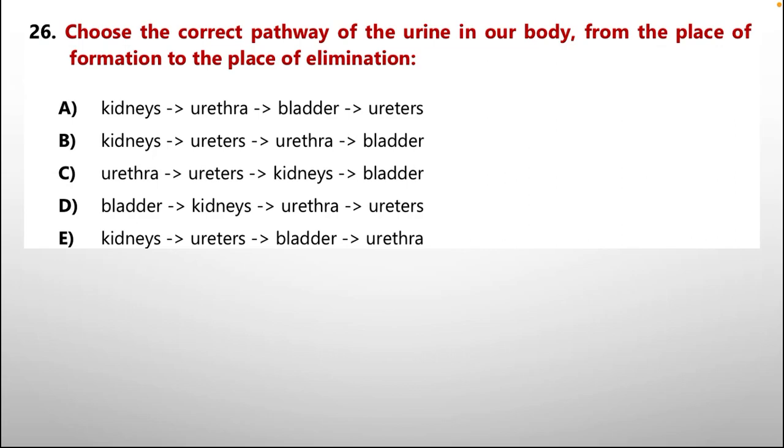Moving on, question number 26. Choose the correct pathway of the urine in our body from the place of formation to the place of elimination. The orders, the different kind of orders are given in options below. Option number A: Kidneys, urethra, bladder, ureters. B: Kidneys, urethra, ureter, bladder. C: Ureter, urethra, kidneys, bladder. D: Bladder, kidneys, ureter, urethra. E: Kidneys, ureter, bladder, urethra.